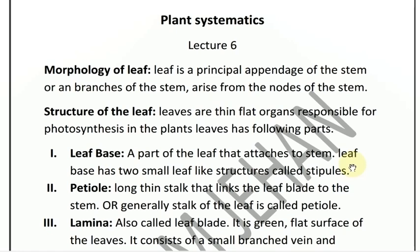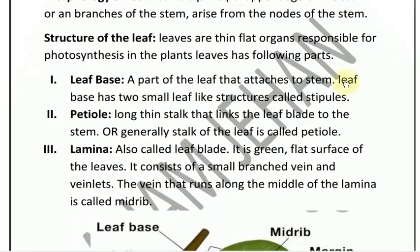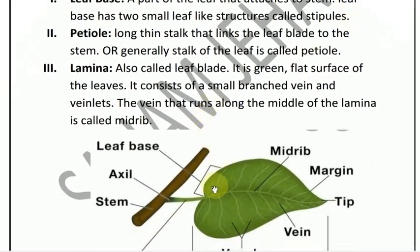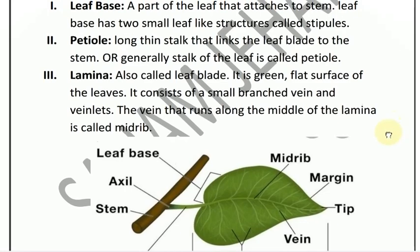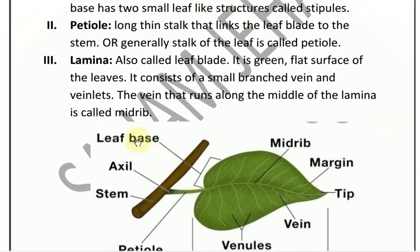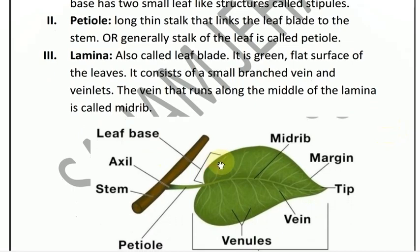See the diagram. Leaf base is a part of the leaf attached to the stem. At the leaf base, there are leaf-like structures called stipules. These strip-like structures or leaf-like structures are called stipules.